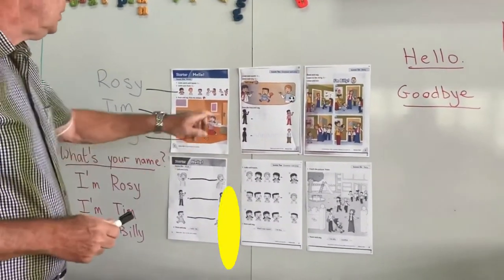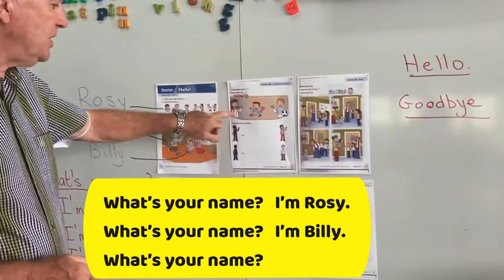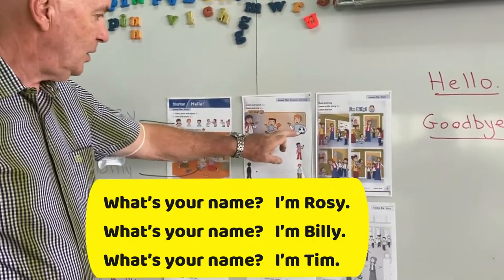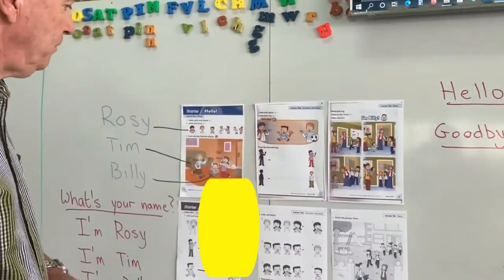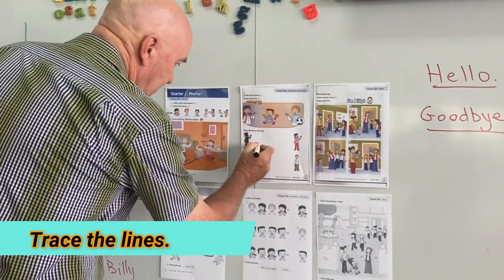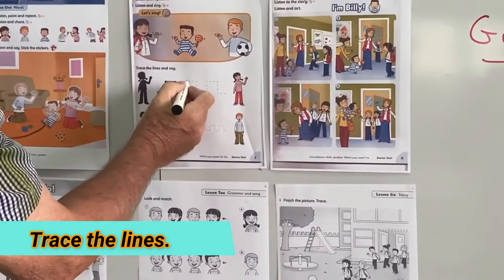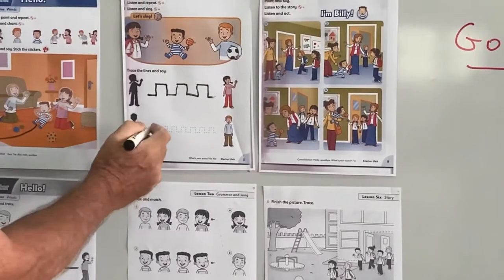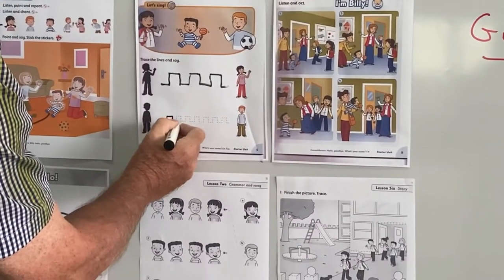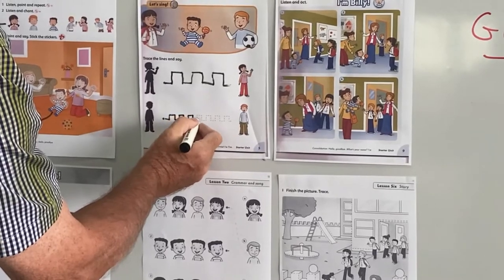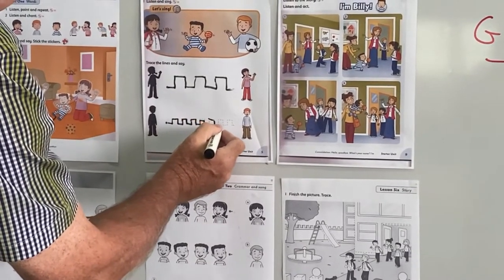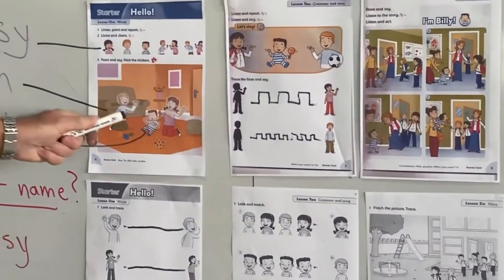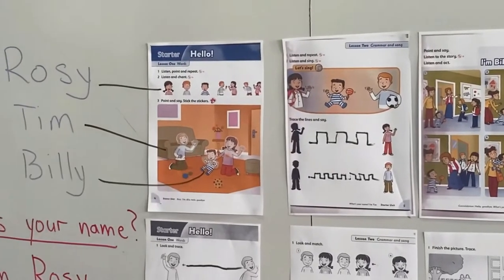What's your name? I'm Rosie. What's your name? I'm Billy. What's your name? I'm Tim. So, Rosie, Tim and Billy.